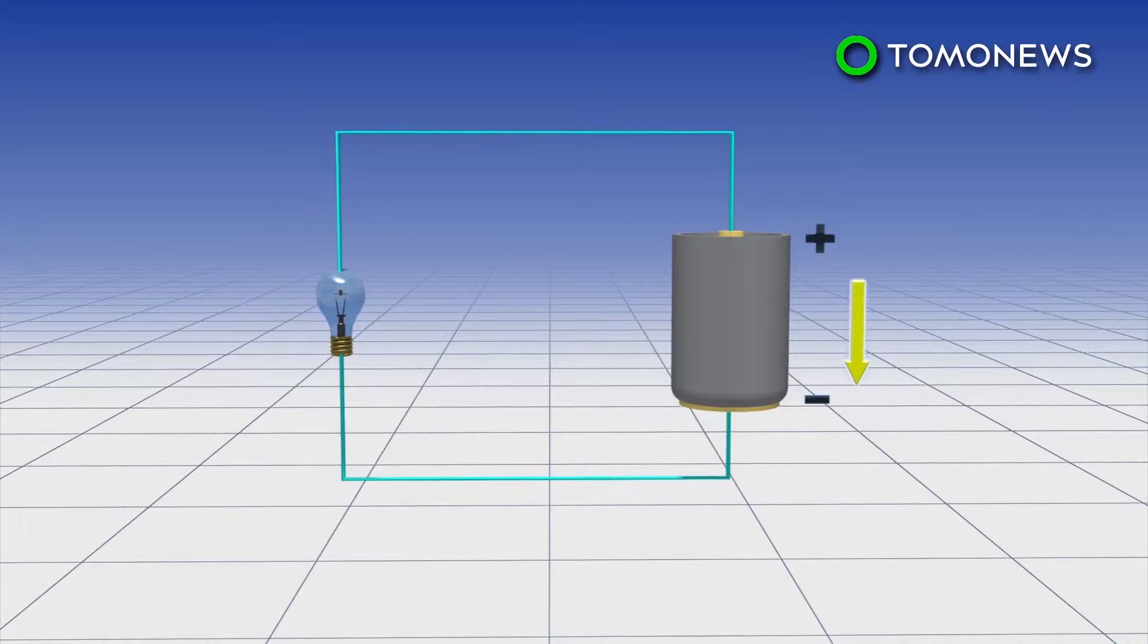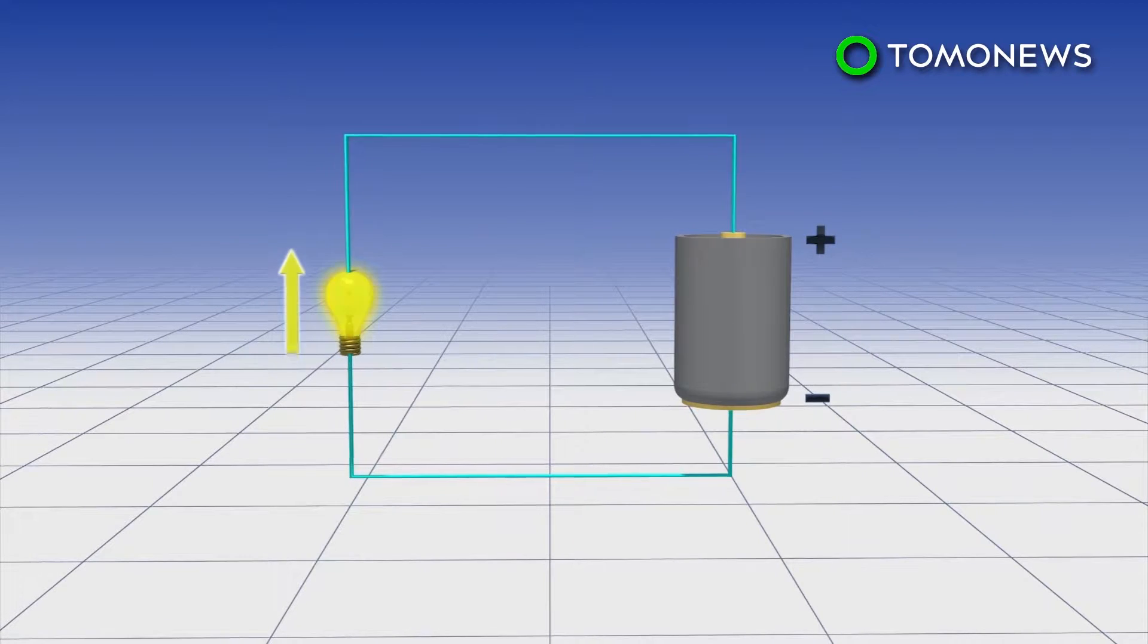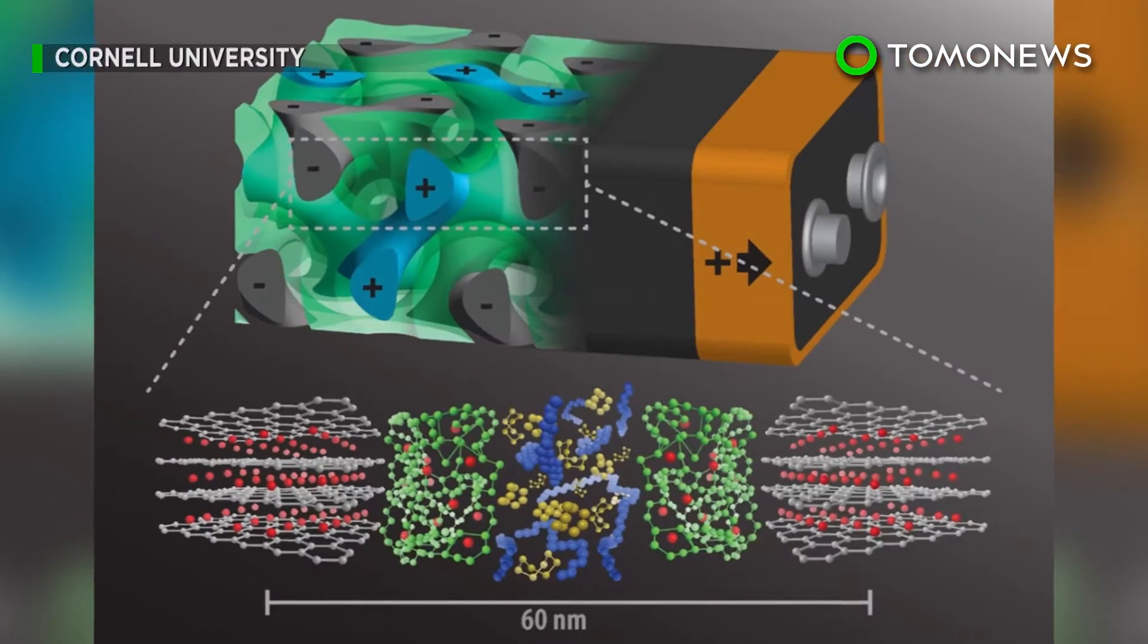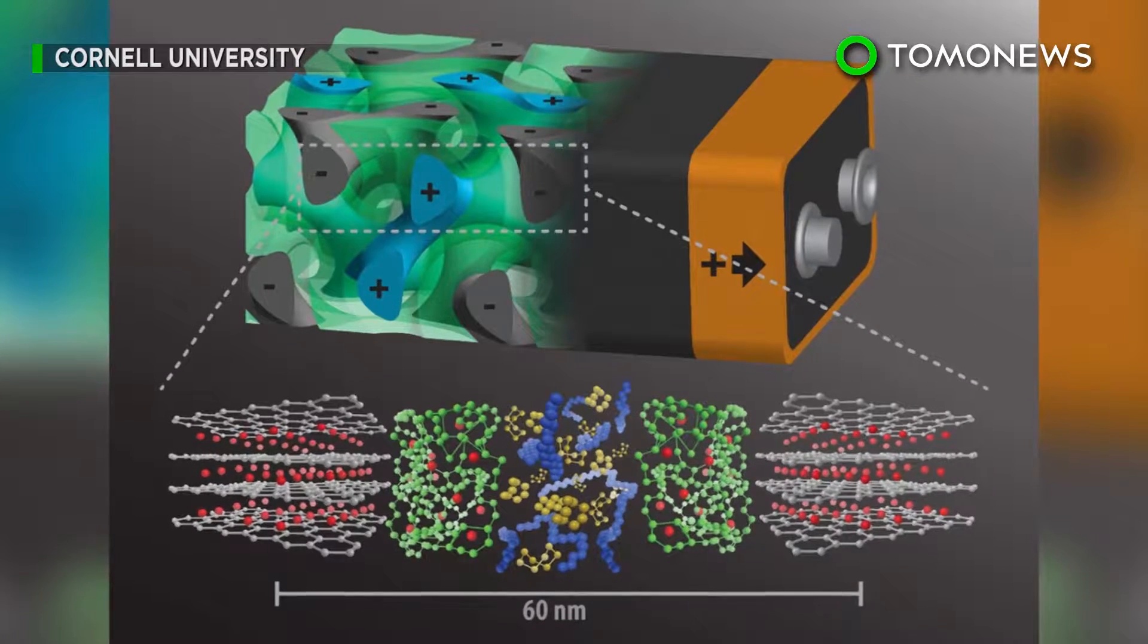Electricity flows out the anode toward whatever it's powering, then back through the battery cathode, creating a circuit. But this design kind of turns that design on its head, and then some.